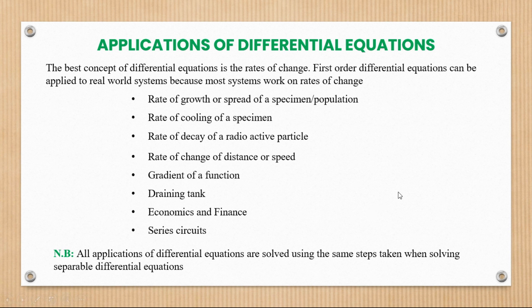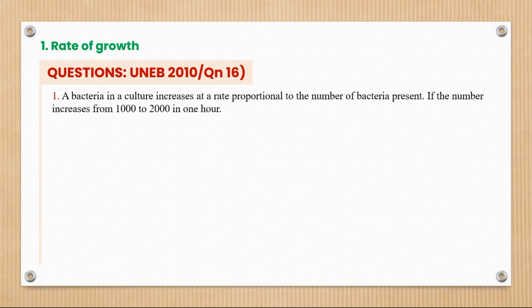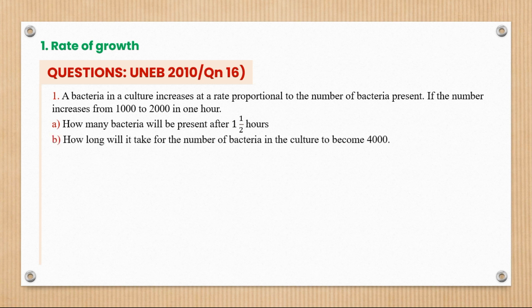Let's look at rates of growth. The first question is from UNAB 2010, question number 16. A bacteria in a culture increases at a rate proportional to the number of bacteria present. If the number increases from 1000 to 2000 in one hour, how many bacteria will be present after one and a half hours? Part b: how long will it take for the number to become four thousand?